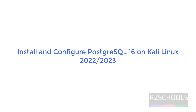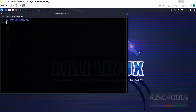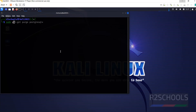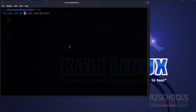Hello guys, in this video we will see how to install and configure PostgreSQL 16 on Kali Linux. The process is the same for all Kali Linux versions. Open the terminal, then run the command: sudo apt-get install postgresql-16.